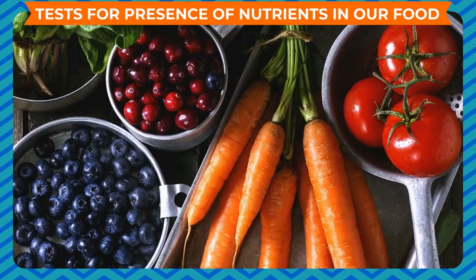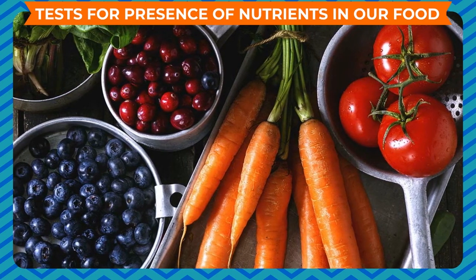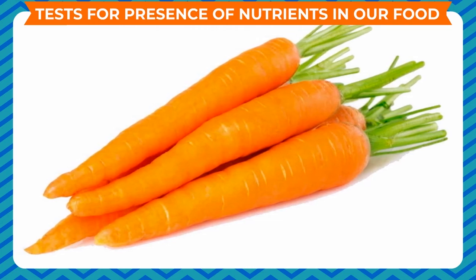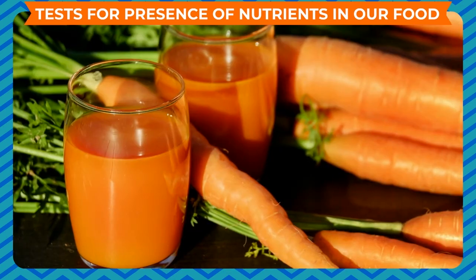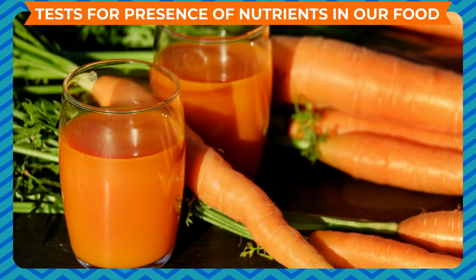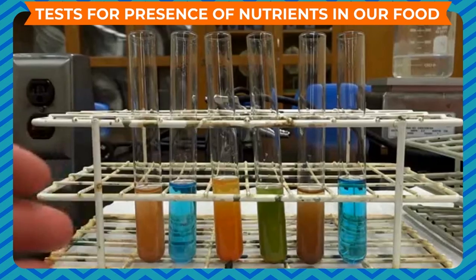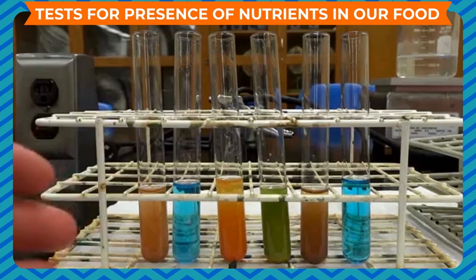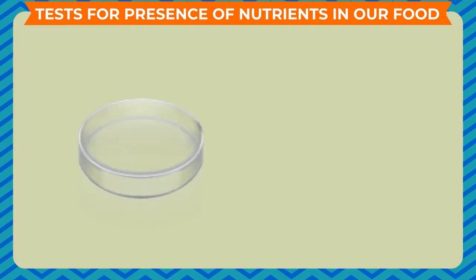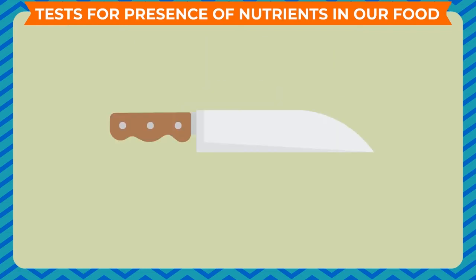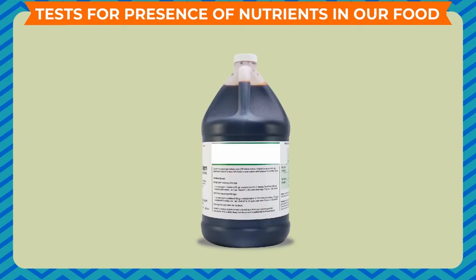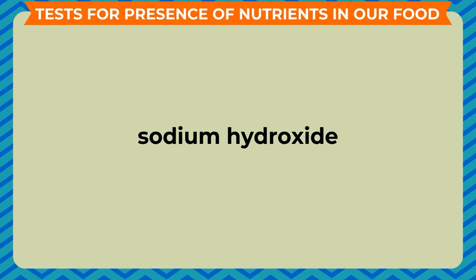Tests for the presence of nutrients in our food: all nutrients may not be present in enough quantities in a food item. We can confirm the presence of a nutrient in a cooked or raw food by performing some tests. The tests for carbohydrates, proteins, and fats are simple and we can perform them easily. For conducting the tests, the equipment and chemical solutions required are test tubes, a petri dish, kitchen knife, glass dropper, glass rod, iodine solution, copper sulfate solution, and sodium hydroxide (caustic soda) solution.